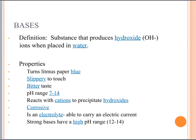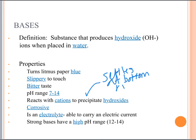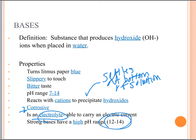Bases are substances that produce hydroxide ions when placed in water — so they pull away the OH- from the hydrogen ion. Instead of turning litmus paper red like acids, bases turn it blue. Bases are slippery to the touch — think soaps. They're not sour, but bitter. They have a pH range above 7. They react with cations to precipitate hydroxide, meaning stuff that settles at the bottom of the solution. Bases are also corrosive and are electrolytes, which means they can carry a charge through water. A very strong base has a high pH of 12 to 14.